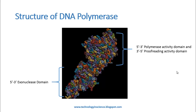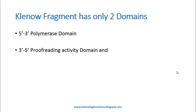At the lower end, we can see the 5' to 3' exonuclease domain. This is the general structure of DNA polymerase. Klenow Fragment has got only two domains: the 5' to 3' polymerase domain and the 3' to 5' proofreading activity domain.